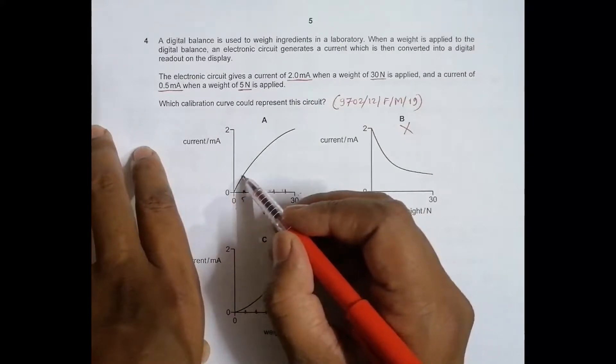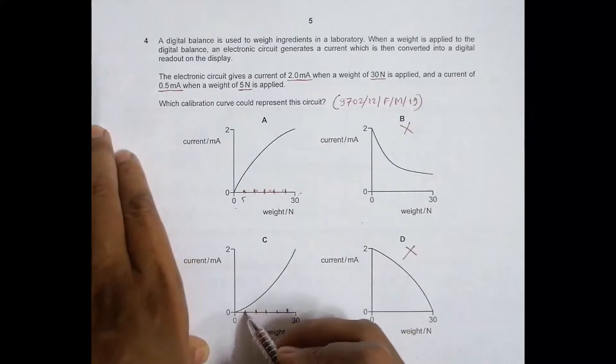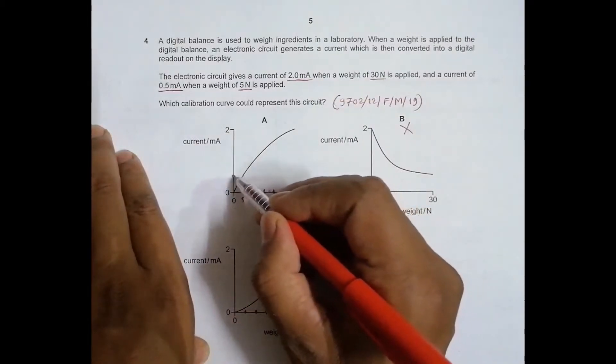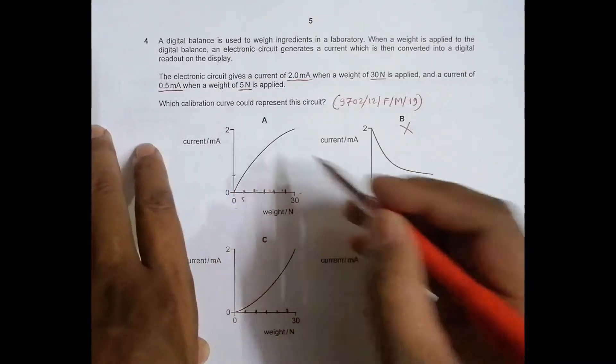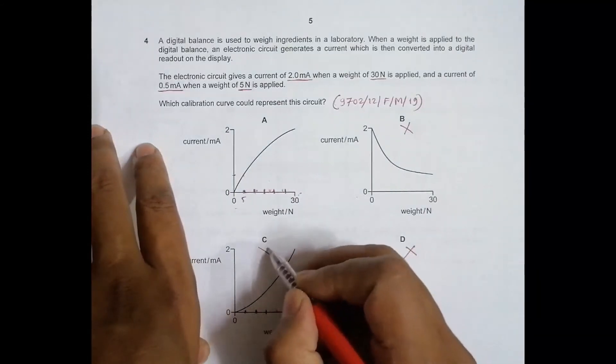That's why option A goes correct. But option D is not so close, because at 5 Newtons it's just about here - this is definitely not 0.5 milliampere because it is very much less than 1/4th of this. But in option A, at 5 it is about 1/4th of this. So choice A should be the correct answer and choice D should be incorrect.